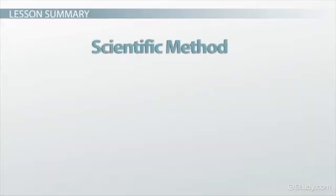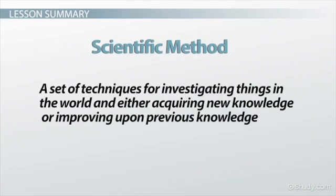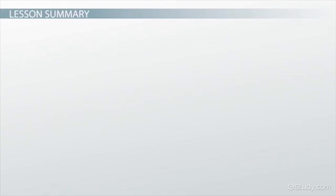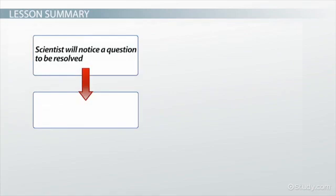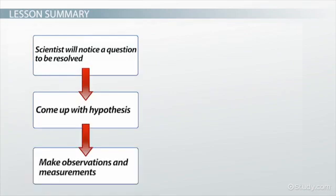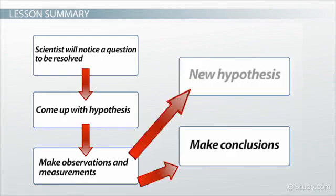The scientific method is a set of techniques for investigating things in the world and either acquiring new knowledge or improving upon previous knowledge. In the scientific method, a scientist will come up with a hypothesis, make observations and measurements to test that hypothesis, and then either make conclusions or come up with a new hypothesis.